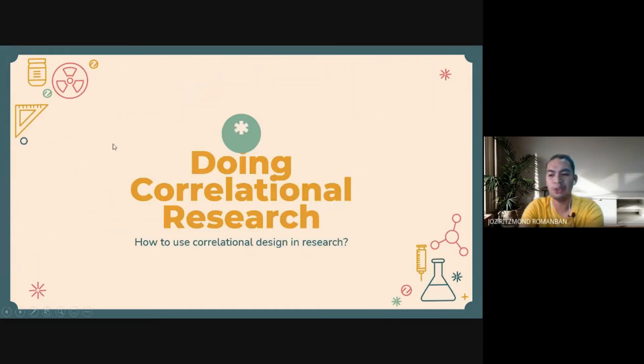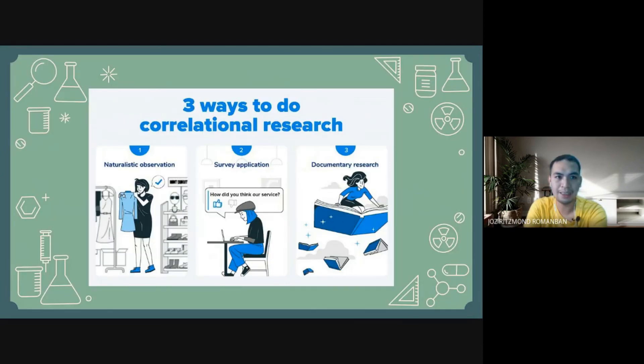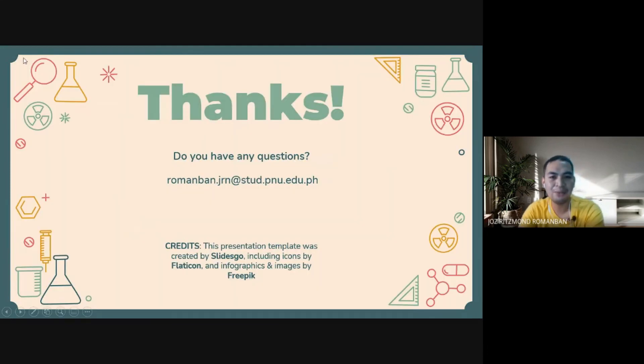Now, how are you going to use correlational design in your research? According to Form Plus, we can use correlational research in three ways: first is by naturalistic observation, next is survey application, and of course, we have documentary research. Those are the things to remember when using correlational research.